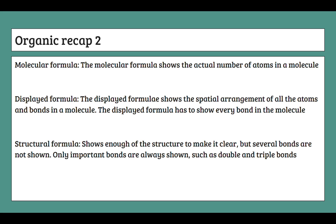There are lots of different types of formulas we need to know for organic chemistry. The molecular formula shows the actual number of atoms in a molecule. In contrast, the empirical formula shows the smallest whole number ratio of the atoms. For example, if a molecule has the formula C₂H₄O₂, the molecular formula is C₂H₄O₂, but since all are divisible by two, the empirical formula is CH₂O.